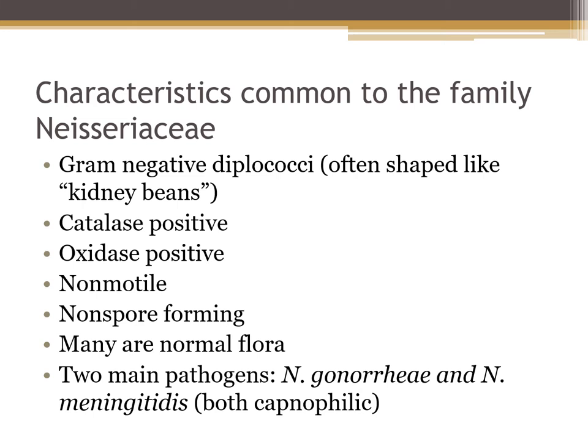There are many characteristics common to the family Neisseriaceae. This is the first group of organisms we've talked about that are gram-negative — specifically gram-negative diplococci, meaning they appear in pairs. These diplococci look a little different than regular cocci; they're kidney bean shaped. Note that Neisseria elongata and Neisseria weaveri are actually gram-negative rods, but all other Neisseriaceae are gram-negative diplococci.